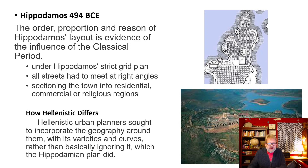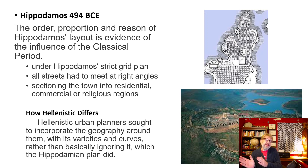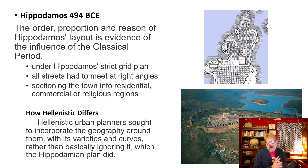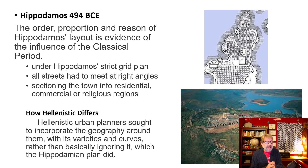We're going to start with Hellenistic art. We've talked about archaic, classical — early, mid, and late — and now we're going into Hellenistic, which is that last part of the Greek Empire before the Romans took over. We're looking at how Hellenistic art is different from those earlier Greek time periods, how the artists evolved, and how it's reflective of that time period.